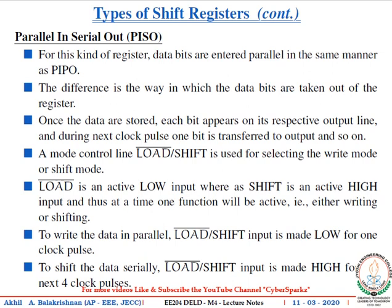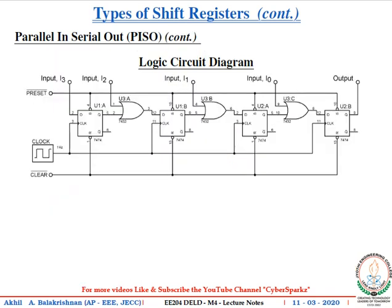The next one is the parallel in serial out (PISO) shift register. PISO is similar to PIPO in terms of how data is input, but the output is different — it outputs only one bit at a time. To input all bits in parallel takes one clock pulse, but to shift out the data you require a corresponding number of clock pulses. For an n-bit data, you require n clock pulses.